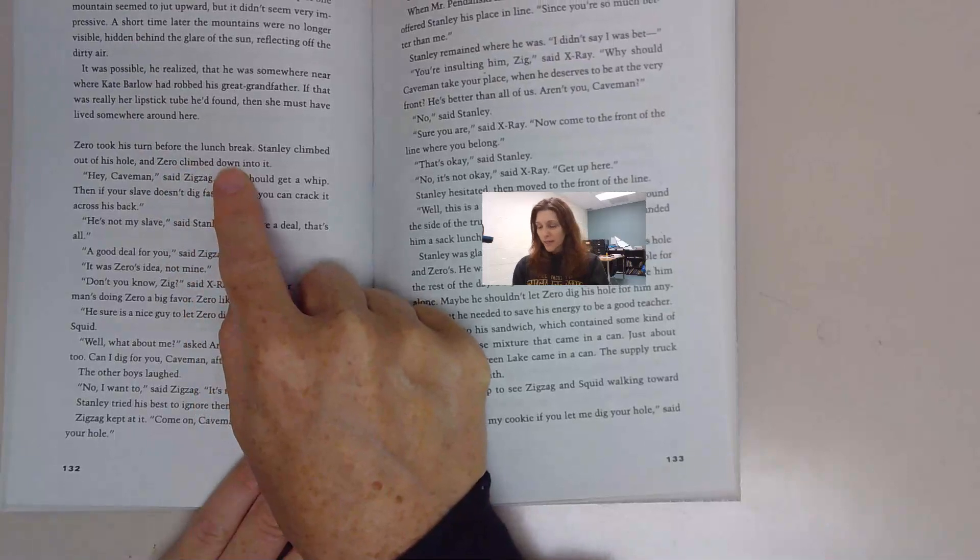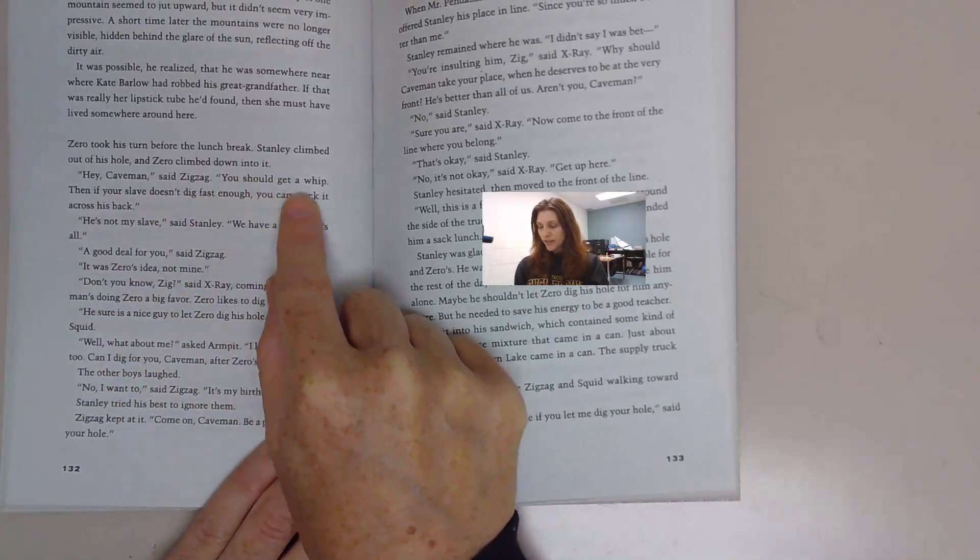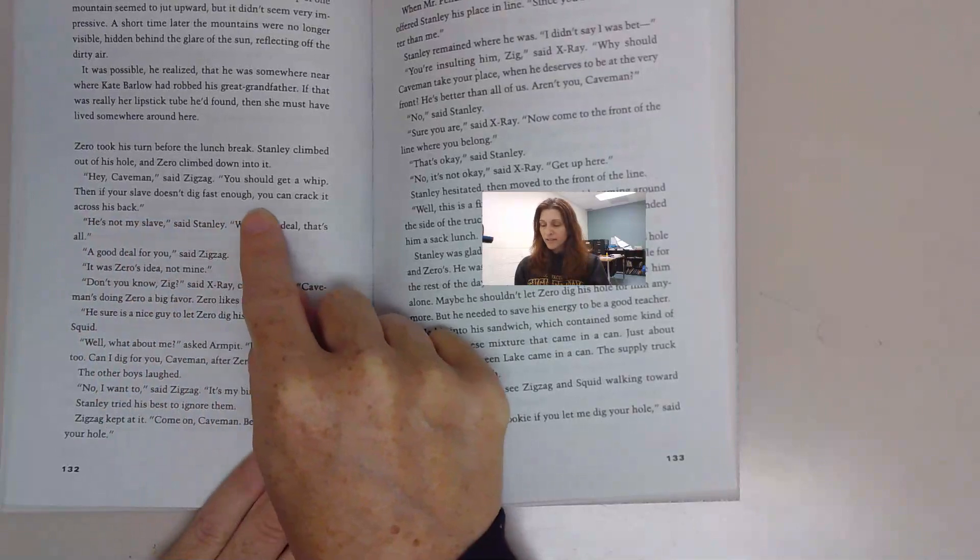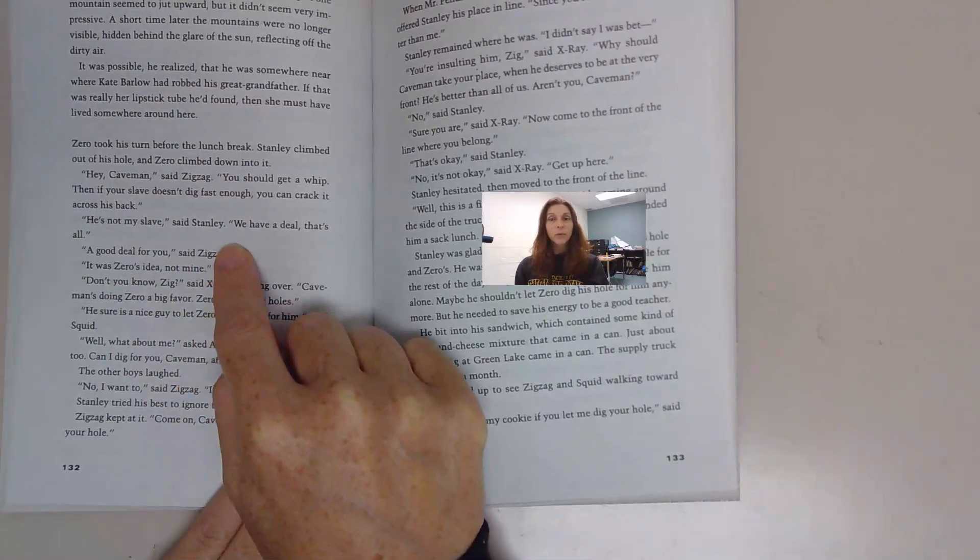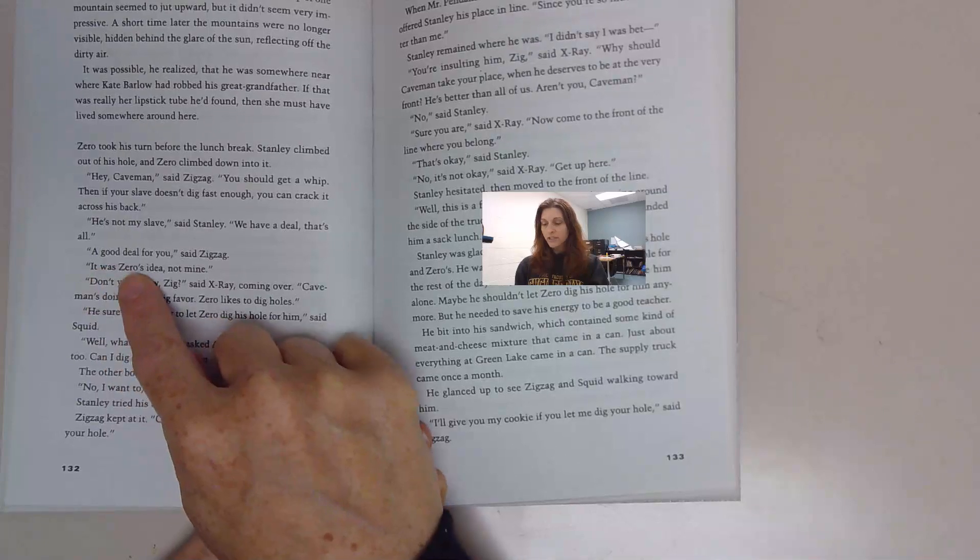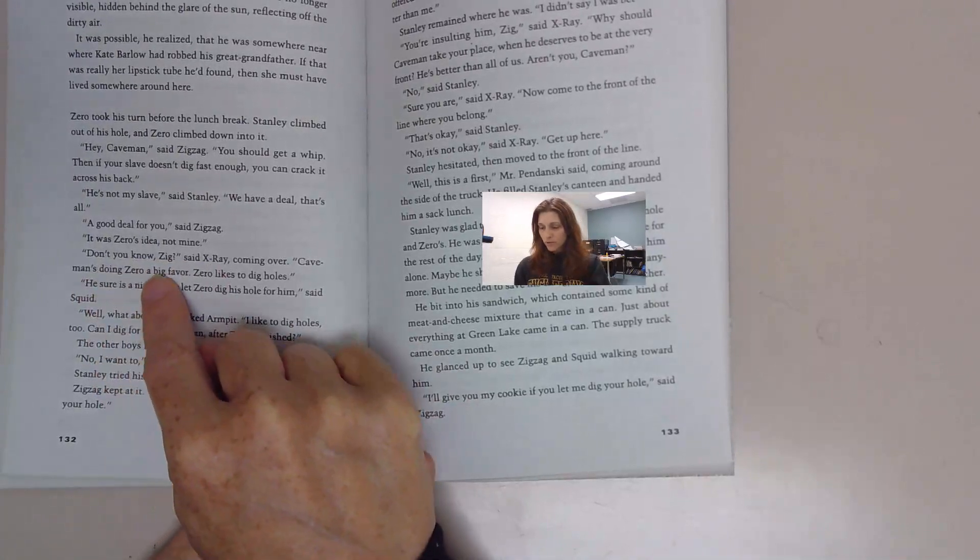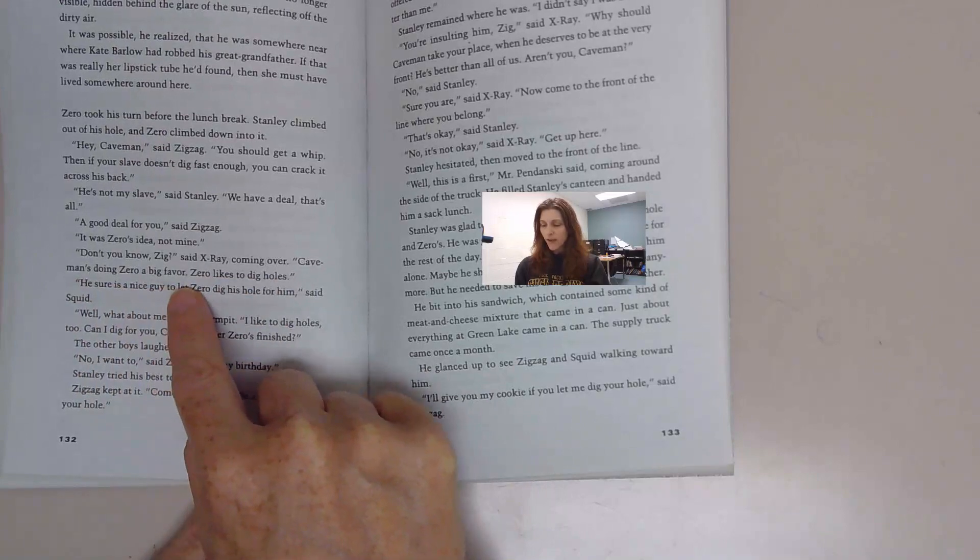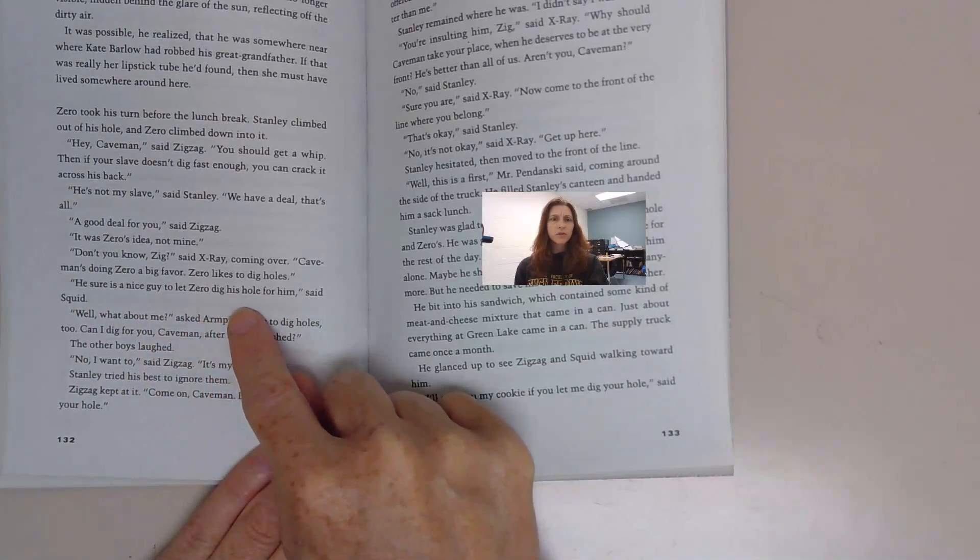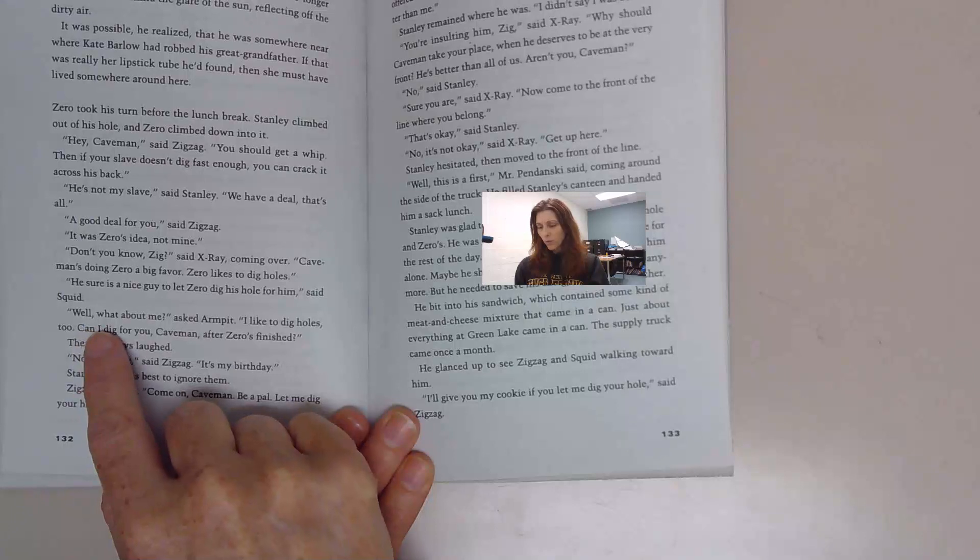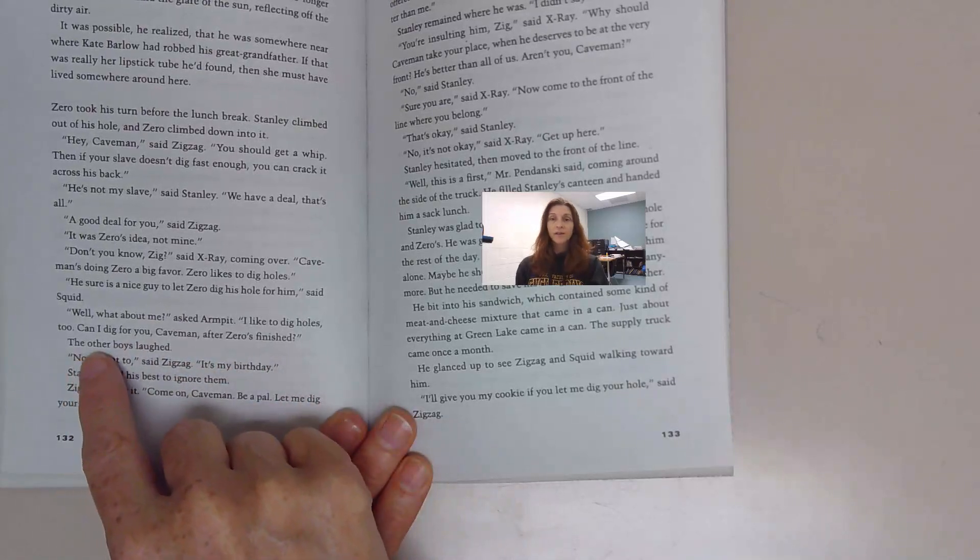Zero took his turn before the lunch break. Stanley climbed out of his hole and Zero climbed down into it. Hey, caveman, said Zigzag. You should get a whip. Then, if your slave doesn't dig fast enough, you can crack it across his back. He's not my slave, said Stanley. We have a deal, that's all. It was Zero's idea, not mine. Don't you know, said X-Ray, Caveman's doing Zero a big favor. Zero likes to dig holes. Can I dig for you, caveman, after Zero's finished? The other boys laughed.